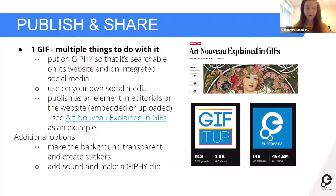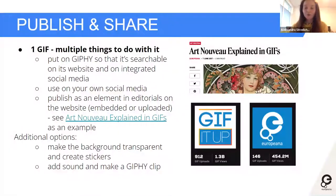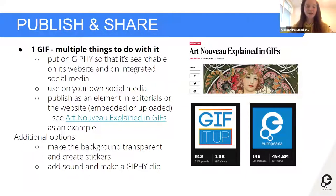You can also make stickers: on Instagram stories those stickers come from GIFs with a transparent background so one element is moving. You can make a sticker directly in Giphy — it's quite easy and takes just a couple of minutes. If you want even more action, you can add sound and make a Giphy Clip, which is then a full tiny clip with both sound and image.